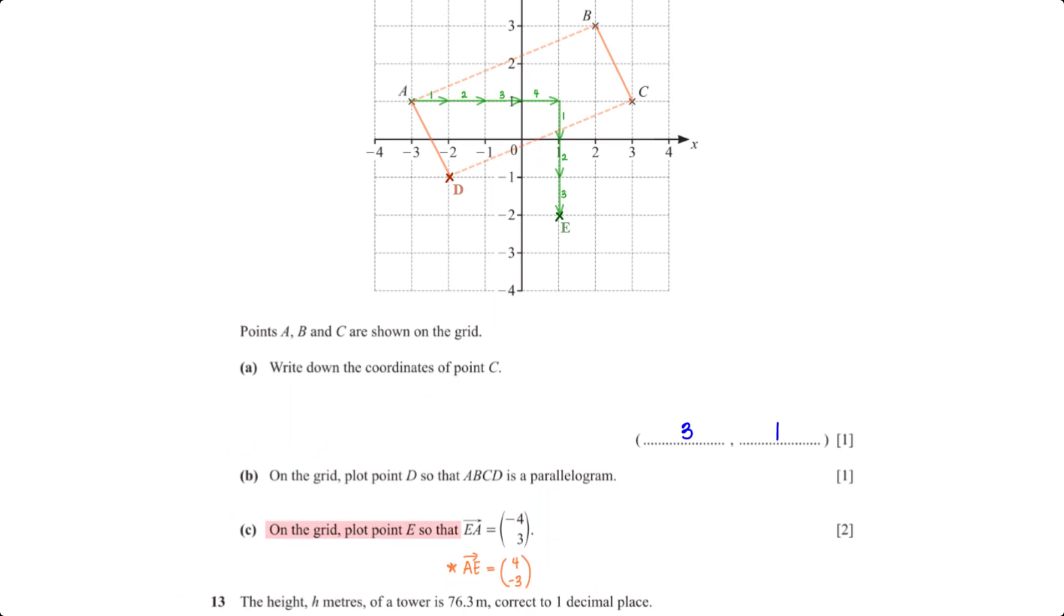On the grid, plot point E so that EA equals negative 4, 3. We've been given EA, but to make it easier, let's find AE, which shows us where to plot point E if we are moving from point A. To get AE, we simply negate EA so we have 4 negative 3. This means, to get to point E from A, we move 4 units to the right and 3 units downwards.